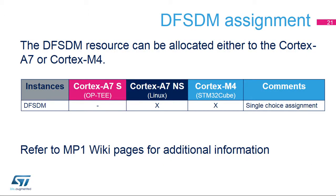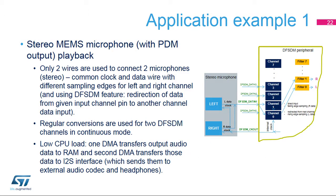The DFSDM block can be assigned either to the Cortex-A7 non-secure or to the Cortex-M4. Please refer to MP1 wiki pages for more details. The STM32 MP1 evaluation board can be used to run simple application examples to explore the digital filter for Sigma-Delta modulator's interface. One example is a demonstration of the MEMS microphone directly connected to the DFSDM peripheral. Data from the microphone are processed by the DFSDM with correct filter settings, then collected into a memory buffer using regular continuous conversions and the DMA, and immediately sent by the DMA controller from this buffer to the I2S peripheral and played by headphones.